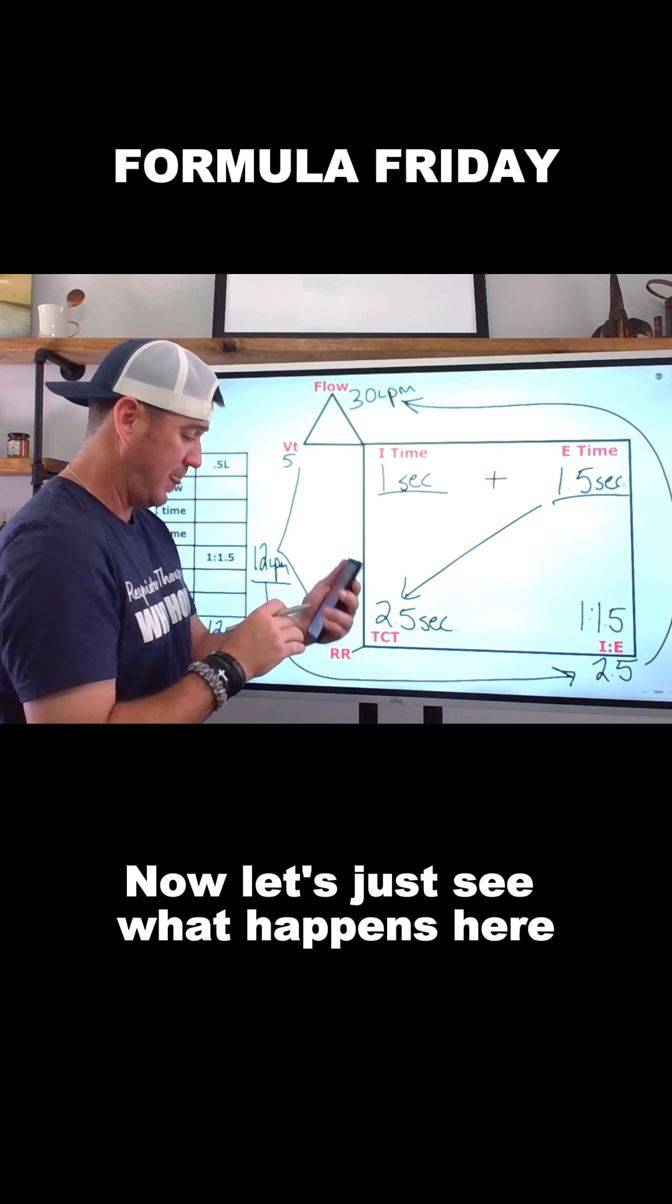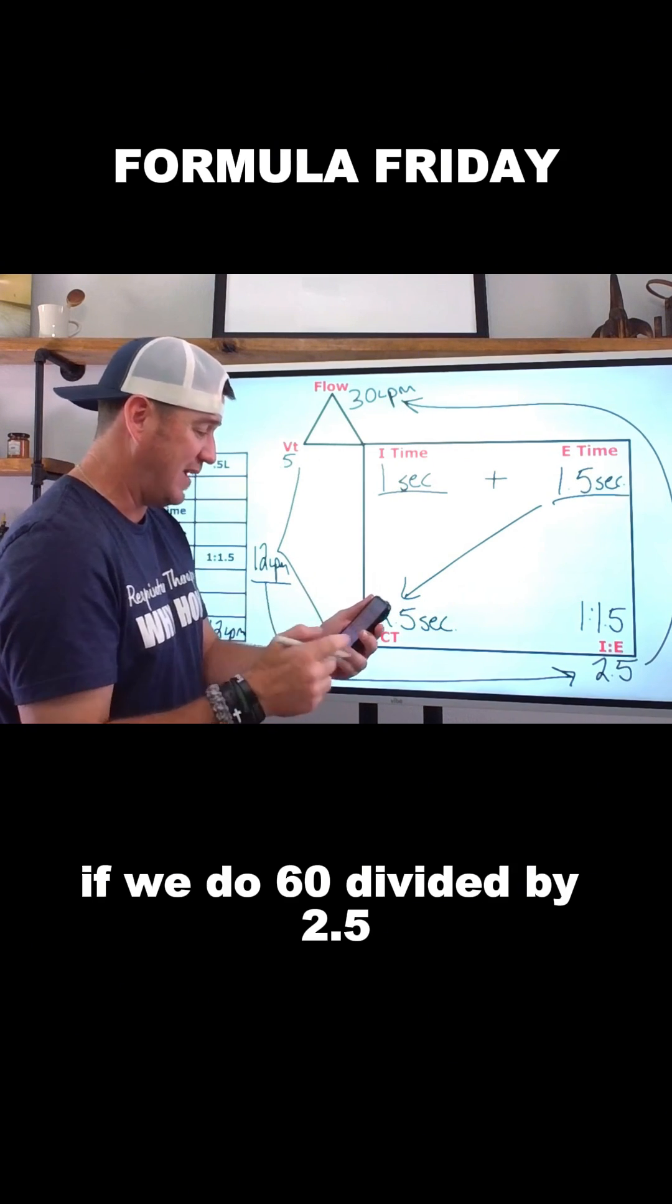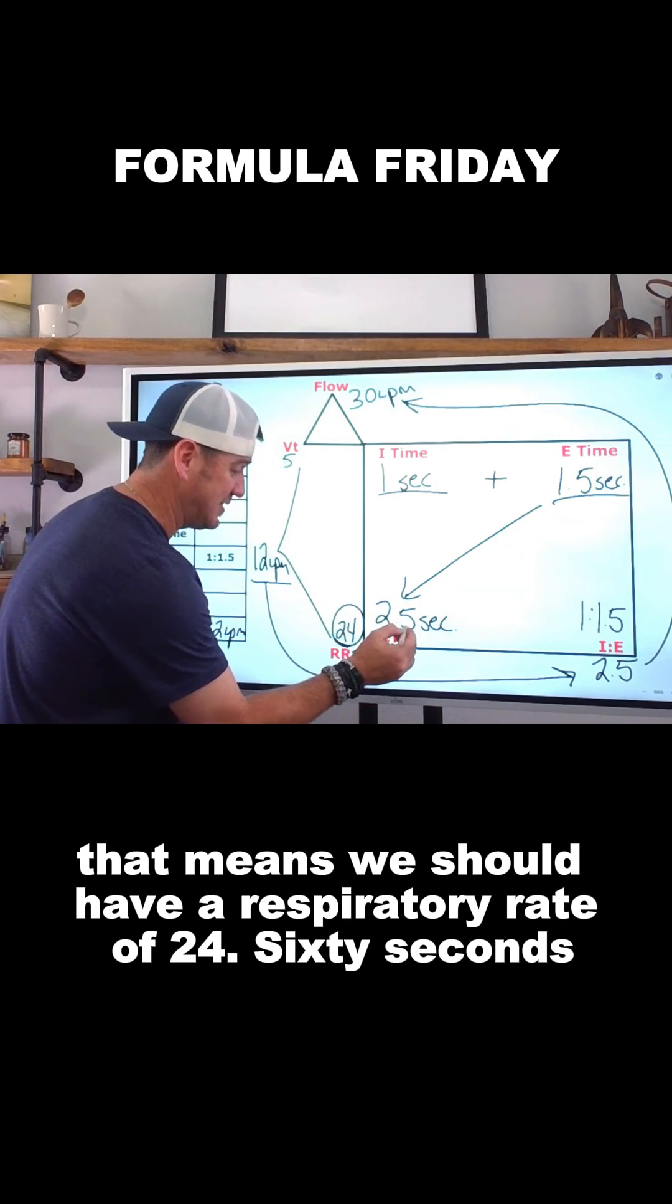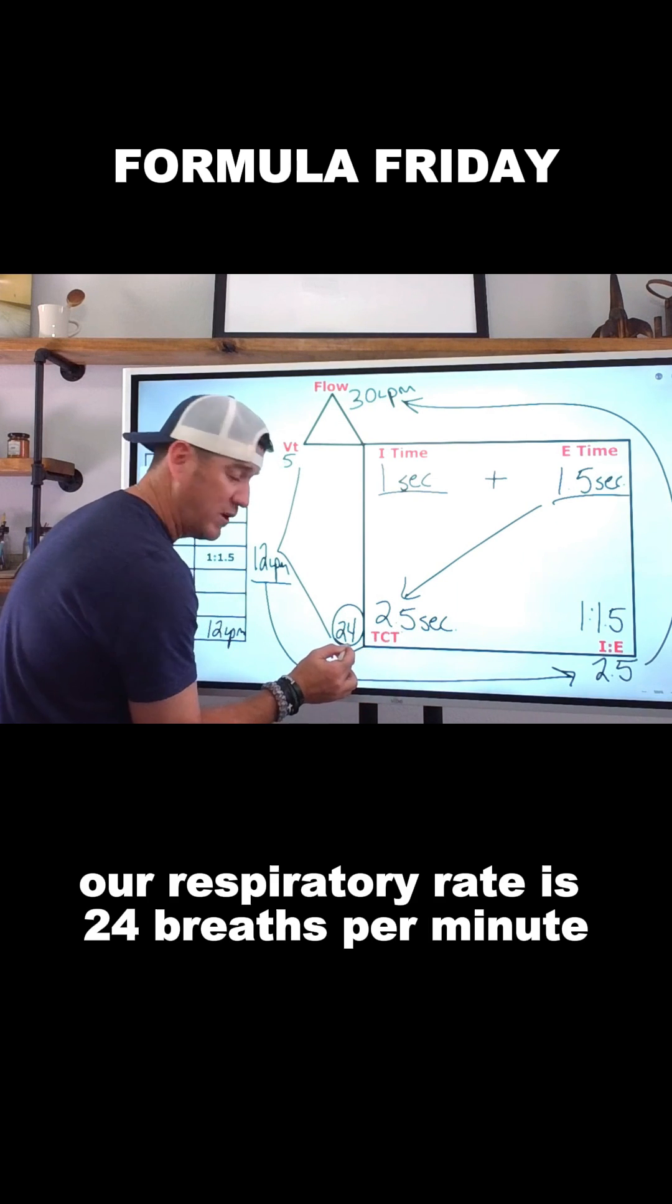Now, let's just see what happens here. If we do 60 divided by 2.5, that means we should have a respiratory rate of 24. 60 seconds, each breath is 2 and a half seconds. That means our respiratory rate is 24 breaths per minute.